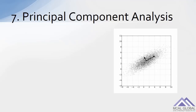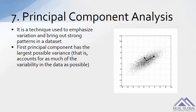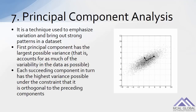Number seven: principal component analysis. It is a technique used to emphasize variation and bring out strong patterns in a data set. The first principal component has the largest possible variance — that is, it accounts for as much of the variability in the data as possible. Each succeeding component in turn has the highest variance possible under the constraint that it is orthogonal to the preceding components.